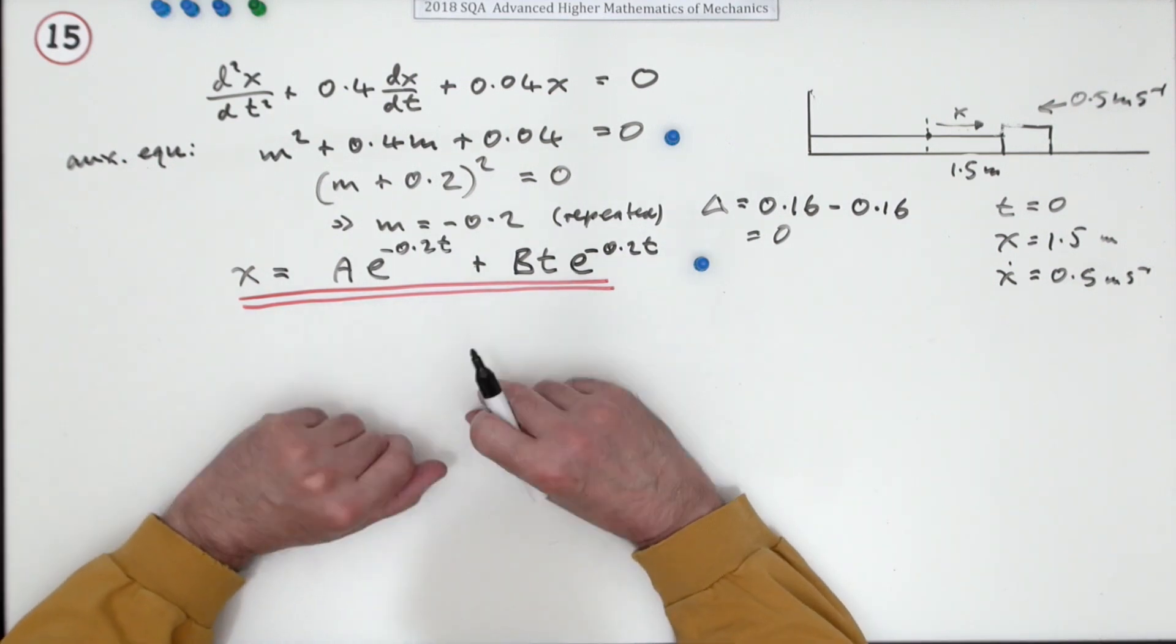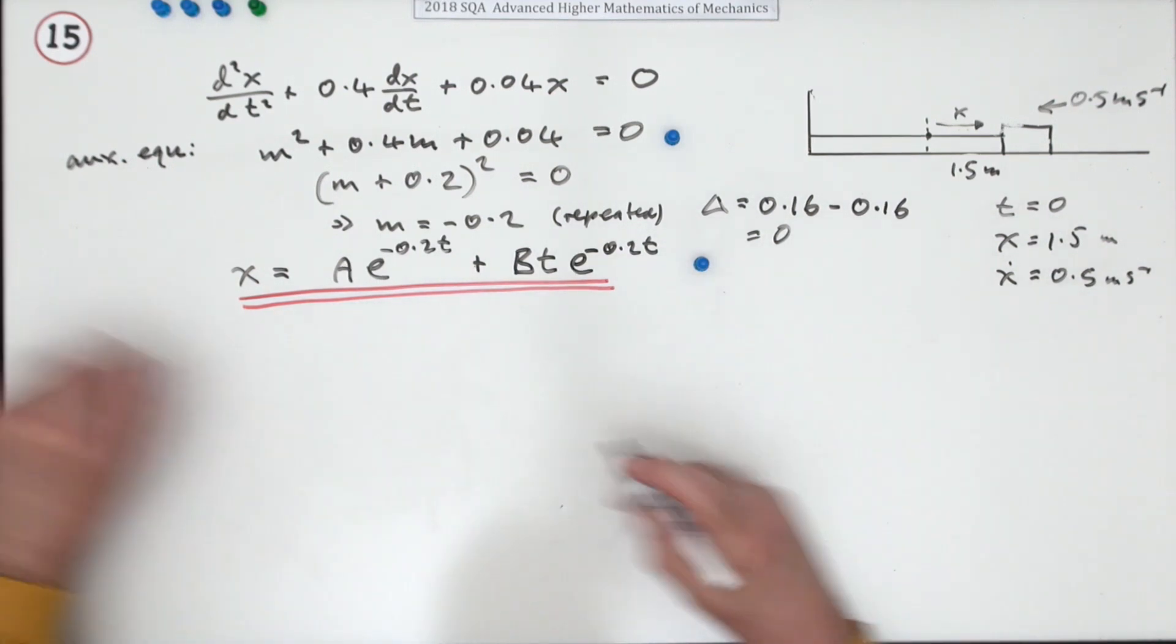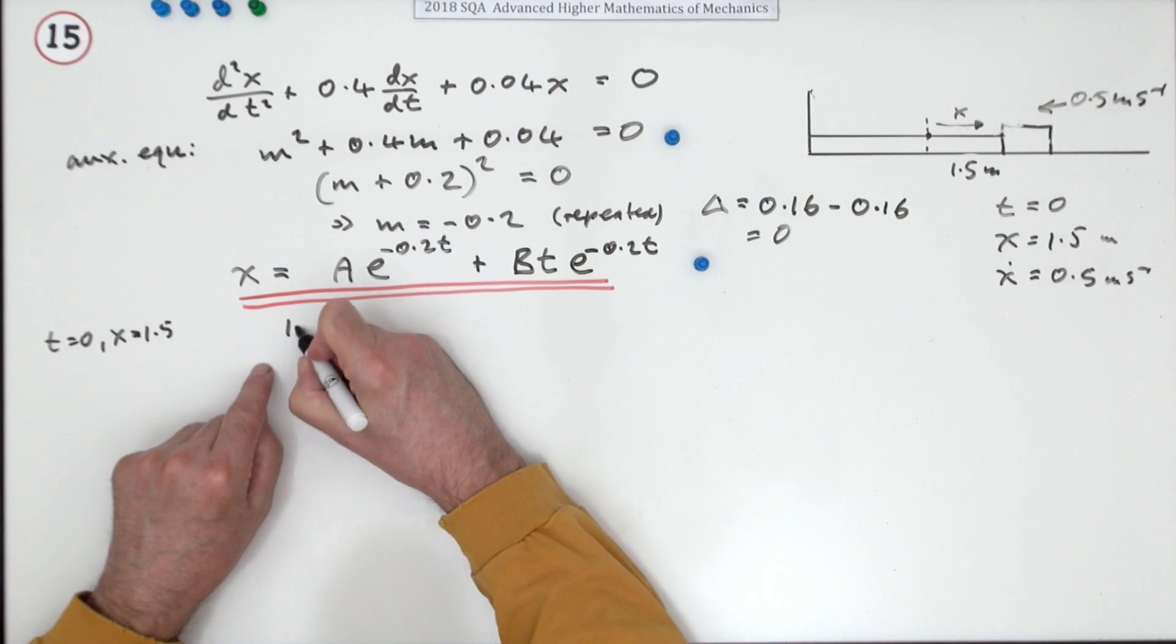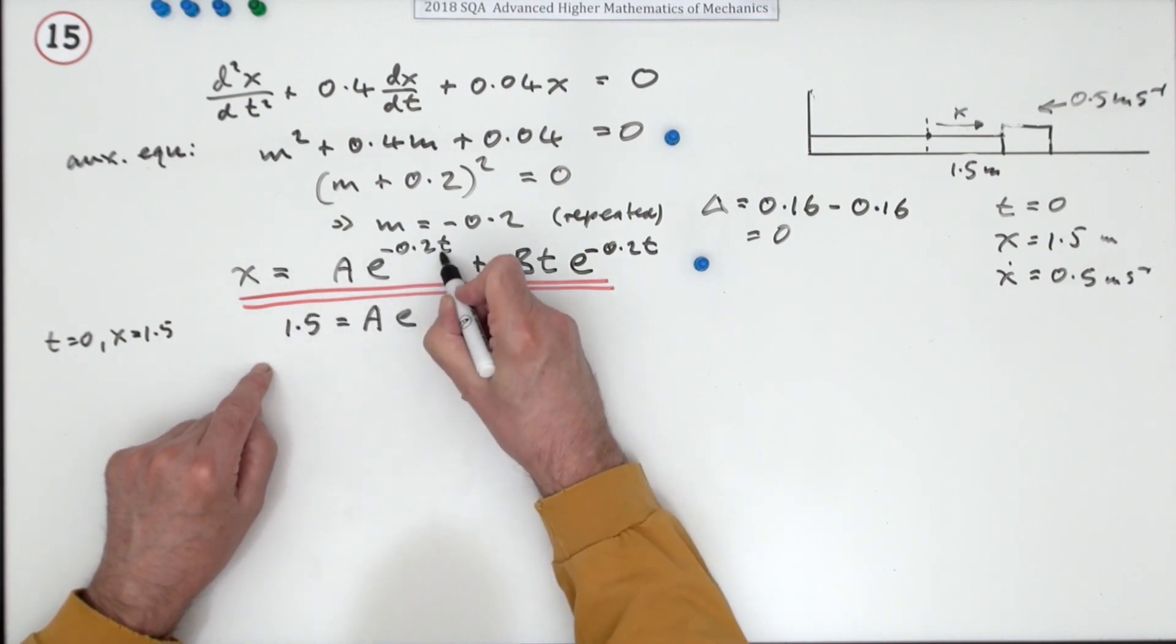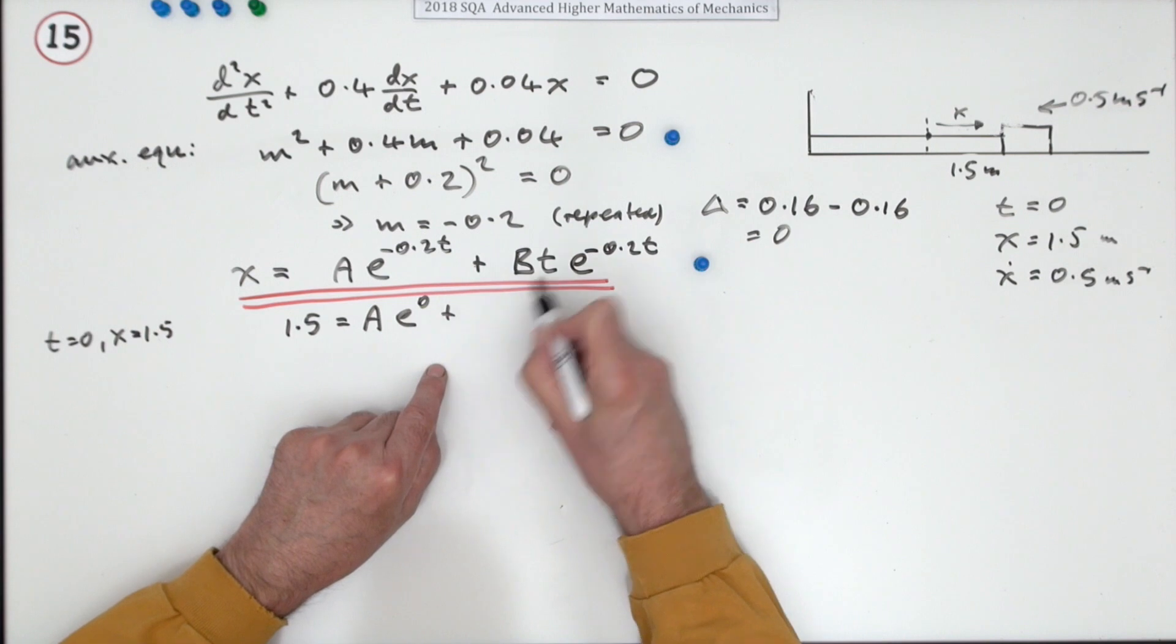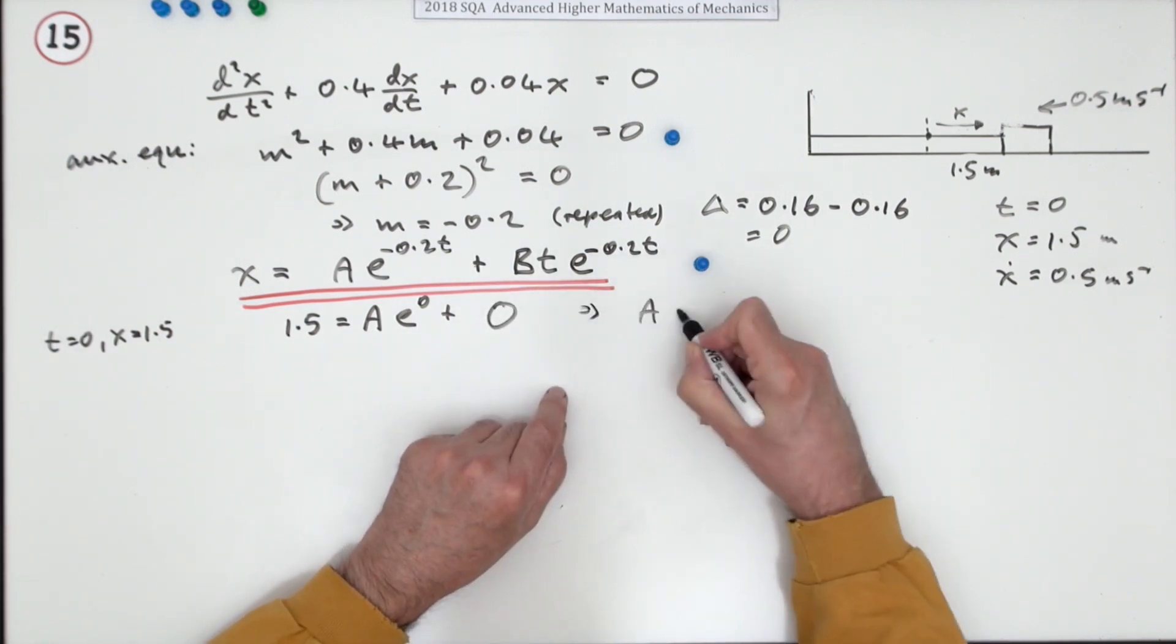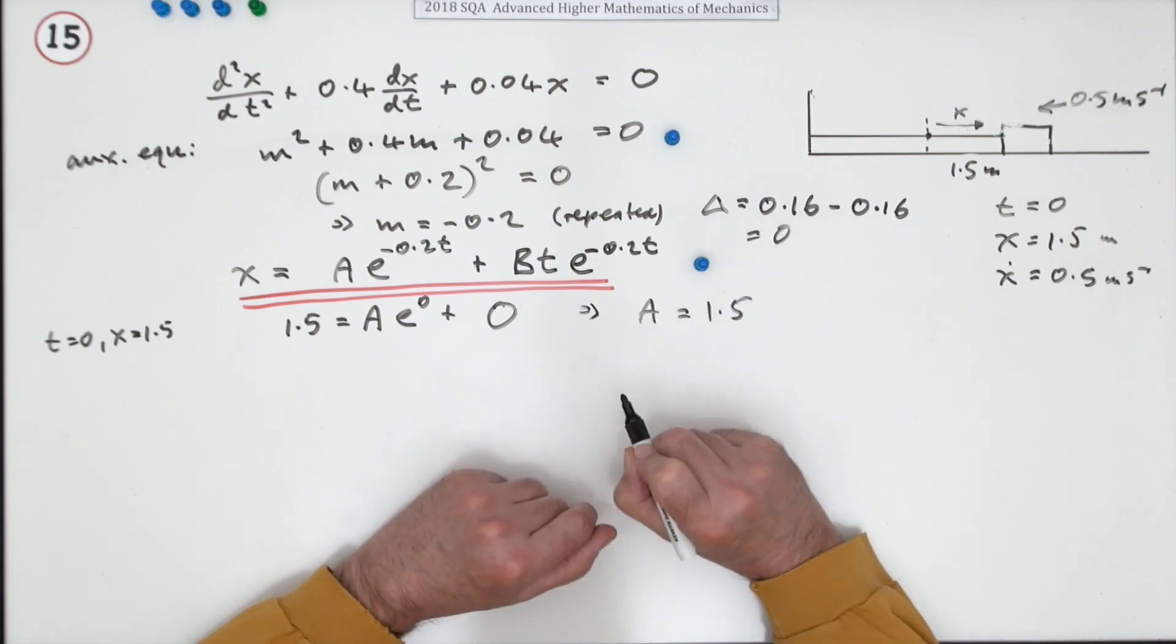But now we have to find A and B, so that's where we go to the initial conditions. When t is 0, x equals 1.5, so I've got 1.5 equals A times e to... when t is 0, that's 0, and when t is 0, that whole thing's 0.